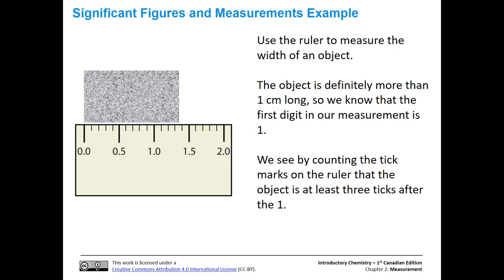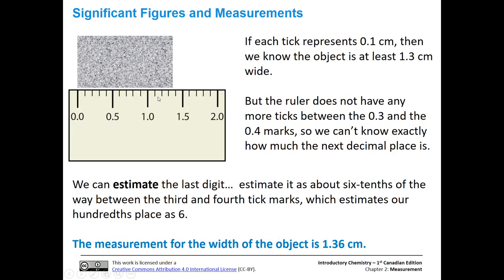The first estimated digit is the last digit between tick marks. We have 1.3, and it looks like it's a little over halfway, so let's call that 0.6. We're going to estimate that last digit — it looks like it's a little more than halfway, so let's make it a six. So 1.36 is a measurement that is reasonable, significant-figures-wise, for this measuring instrument. We have two known digits and then one estimated digit.